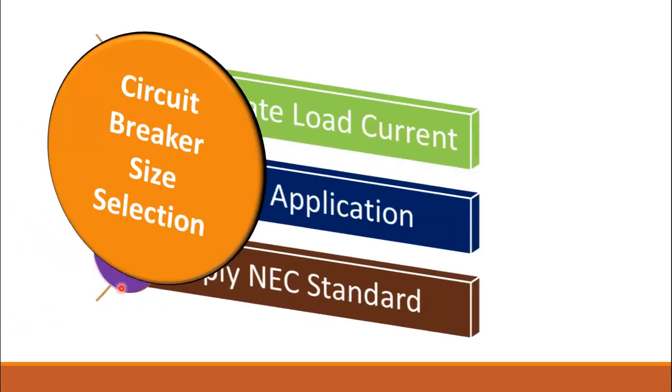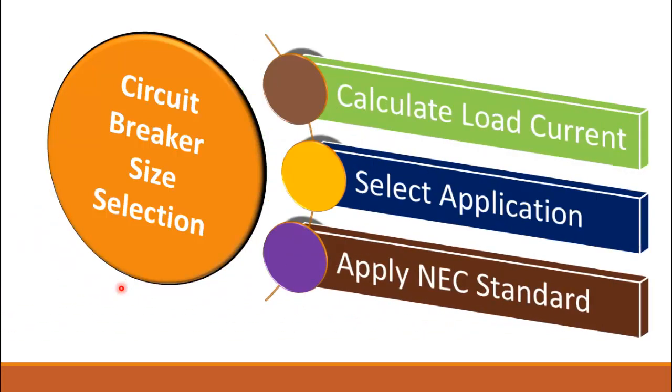Welcome to another video. In this video we'll learn how to properly size the circuit breaker according to our application. The sizing of the circuit breaker means the selection of the ampere rating, because it is the most important selection — it provides protection to your circuit and the load connected to the branch circuit. There are three steps in sizing the circuit breaker: first, compute the load current; after that, select the type of application.